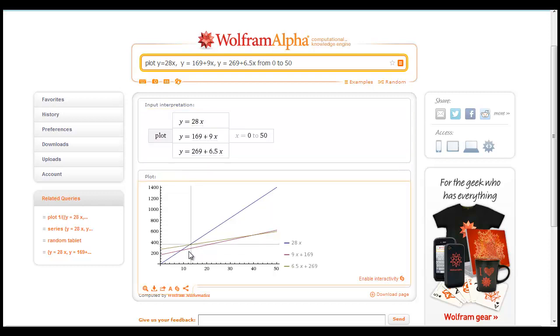And so if you want to plot all three of these on the same axis, you just put plot, three equations separated by commas. And then you can actually say what range, so the domain from zero to 50. So here's from zero books to 50 books, and you can see how they compare.